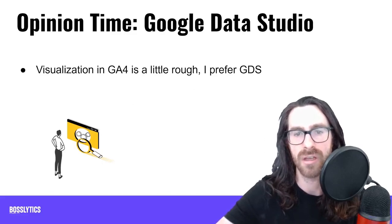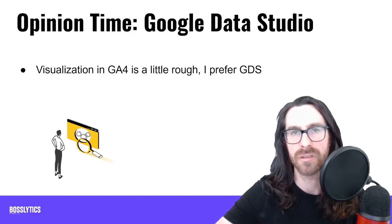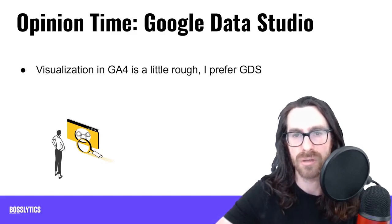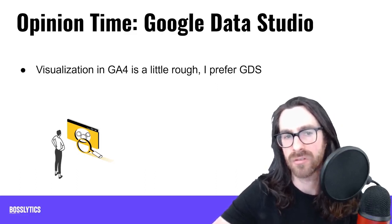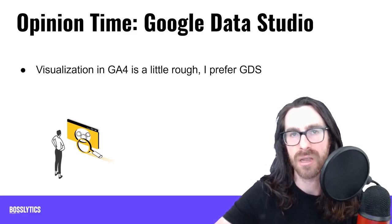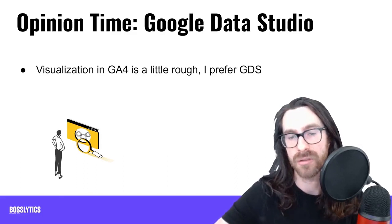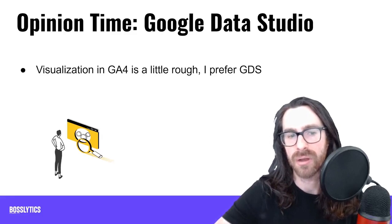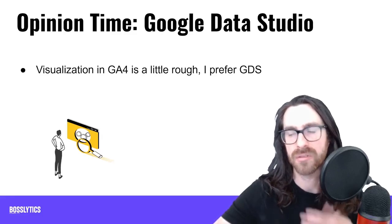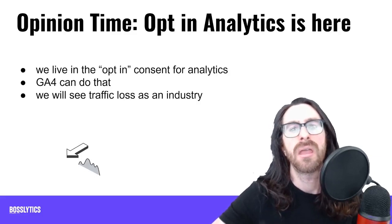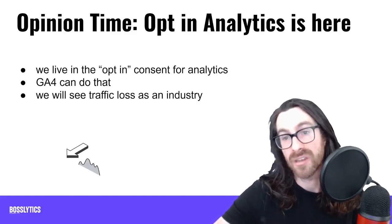At its current iteration, visualization in GA4 is a little tough. I have trouble discerning what pages and events are performing the most, so I prefer Google Data Studio. I was already familiar with using it connected to my Universal Analytics data, and I'm definitely going to continue that. Visualization in GA4 leaves a little to be desired, and the way around that is creating Google Data Studio reports.